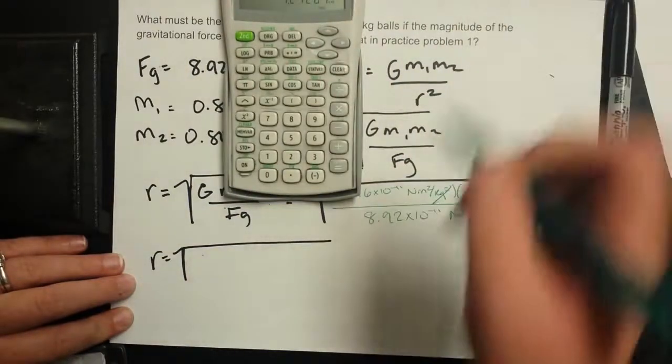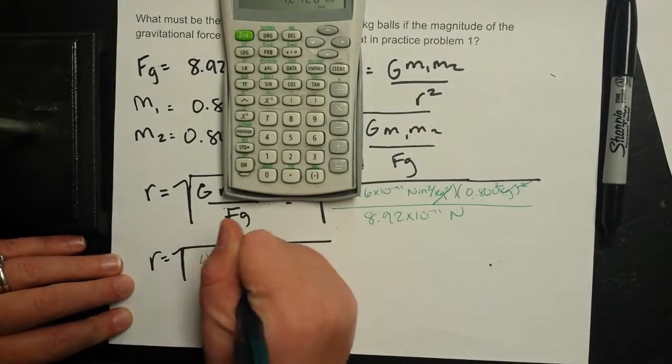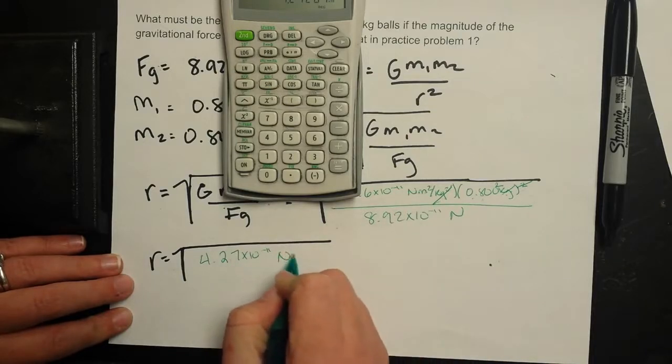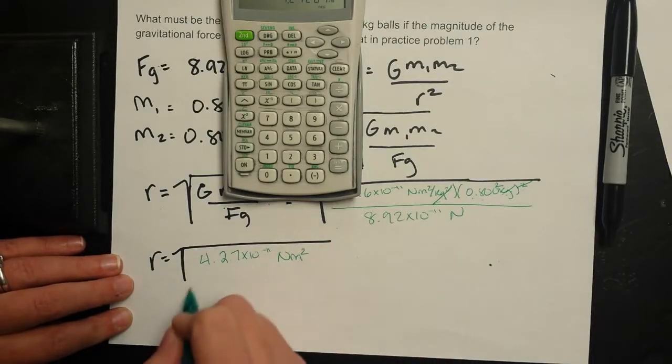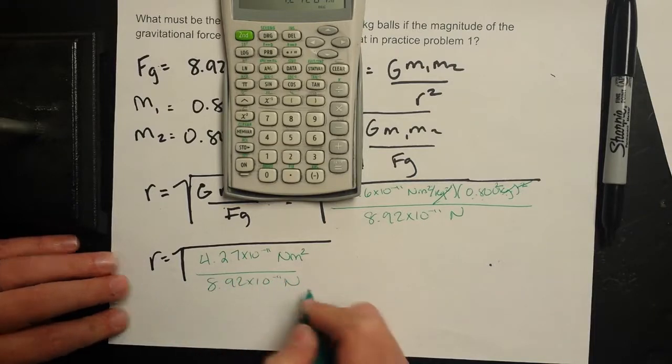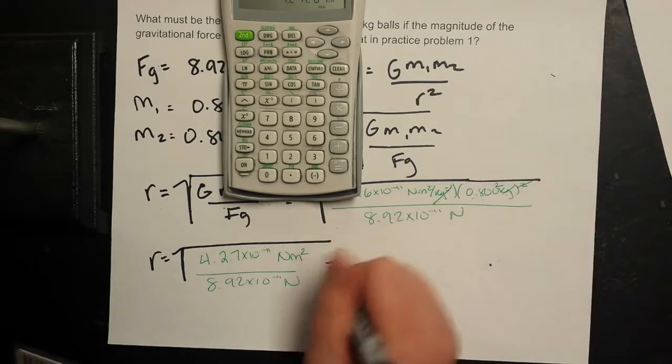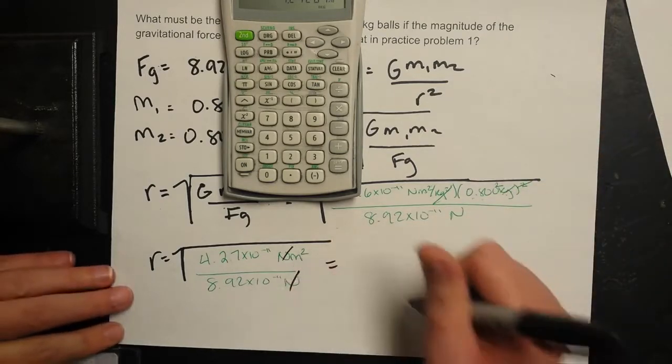So my numerator would be 4.27 times 10 to the negative 11th newton meters squared divided by 8.92 times 10 to the negative 11th newtons. My newtons will cancel. I'll end up with meters squared.